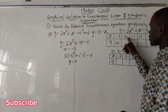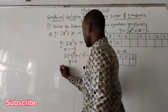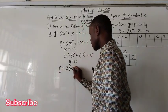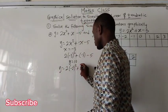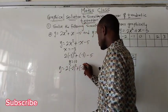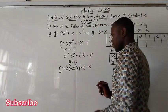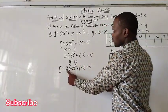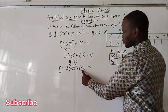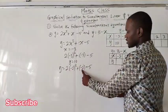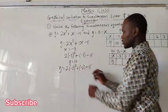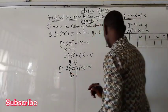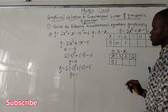Then we solve for negative 2. y equals 2 times negative 2 squared plus negative 2 minus 5. Negative 2 squared is 4 times 2, giving us 8. 8 minus 2 is 6; 6 minus 5 is 1. So y is positive 1.